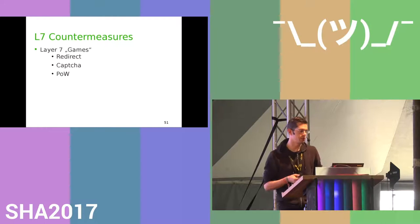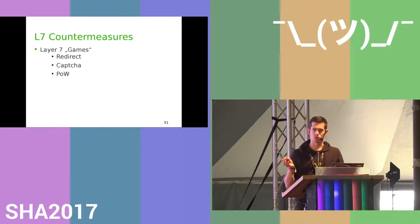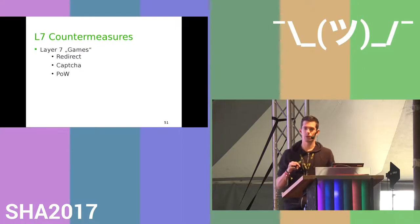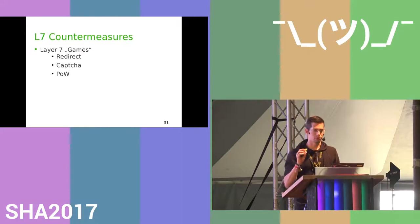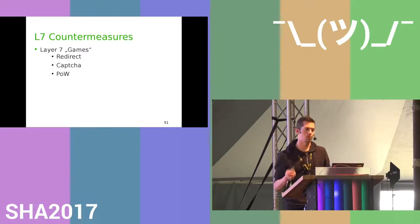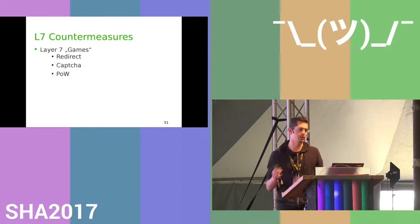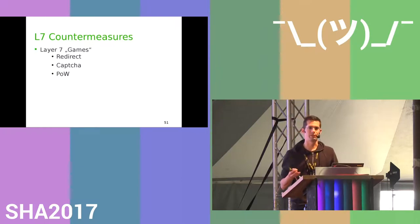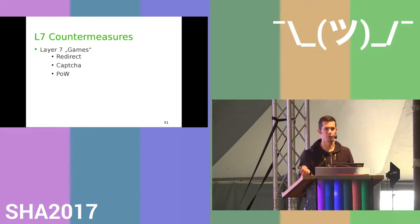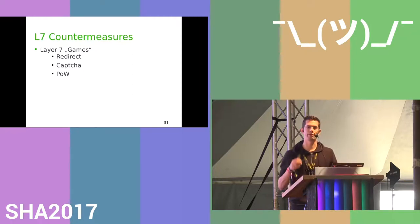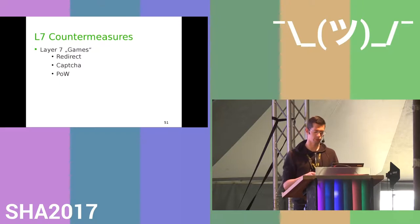For layer 7, you can show a CAPTCHA, use a 301 redirect (checking if the client follows it — if not, it's probably not a valid HTTP client and gets blocked), or use a proof-of-work cryptographic puzzle that the client must solve. I think Cloudflare is already implementing this.